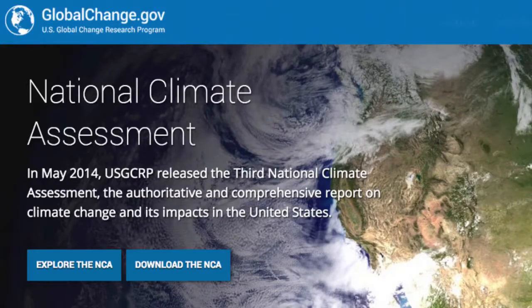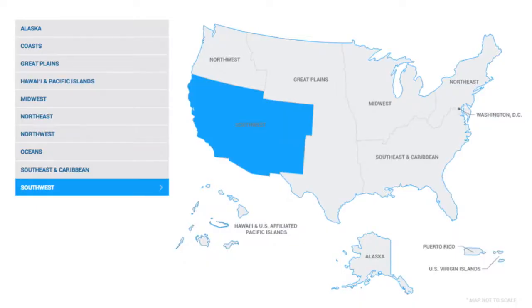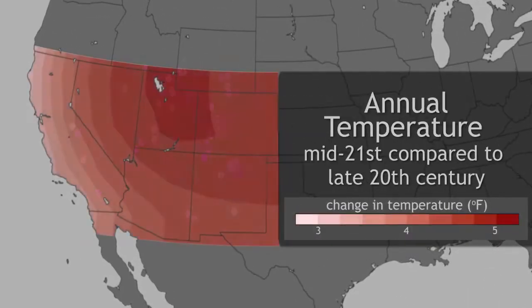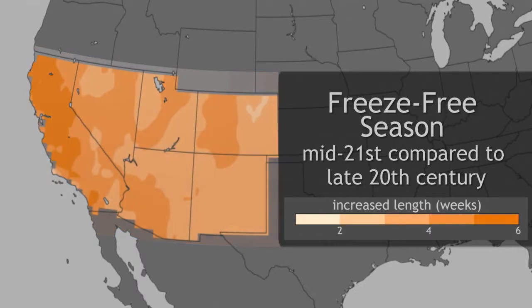Scientists from around the nation have assembled the third national climate assessment, which demonstrates the southwest region as a whole may have earlier spring runoff, warmer temperature, less precipitation, and a longer freeze-free season by the end of the century.